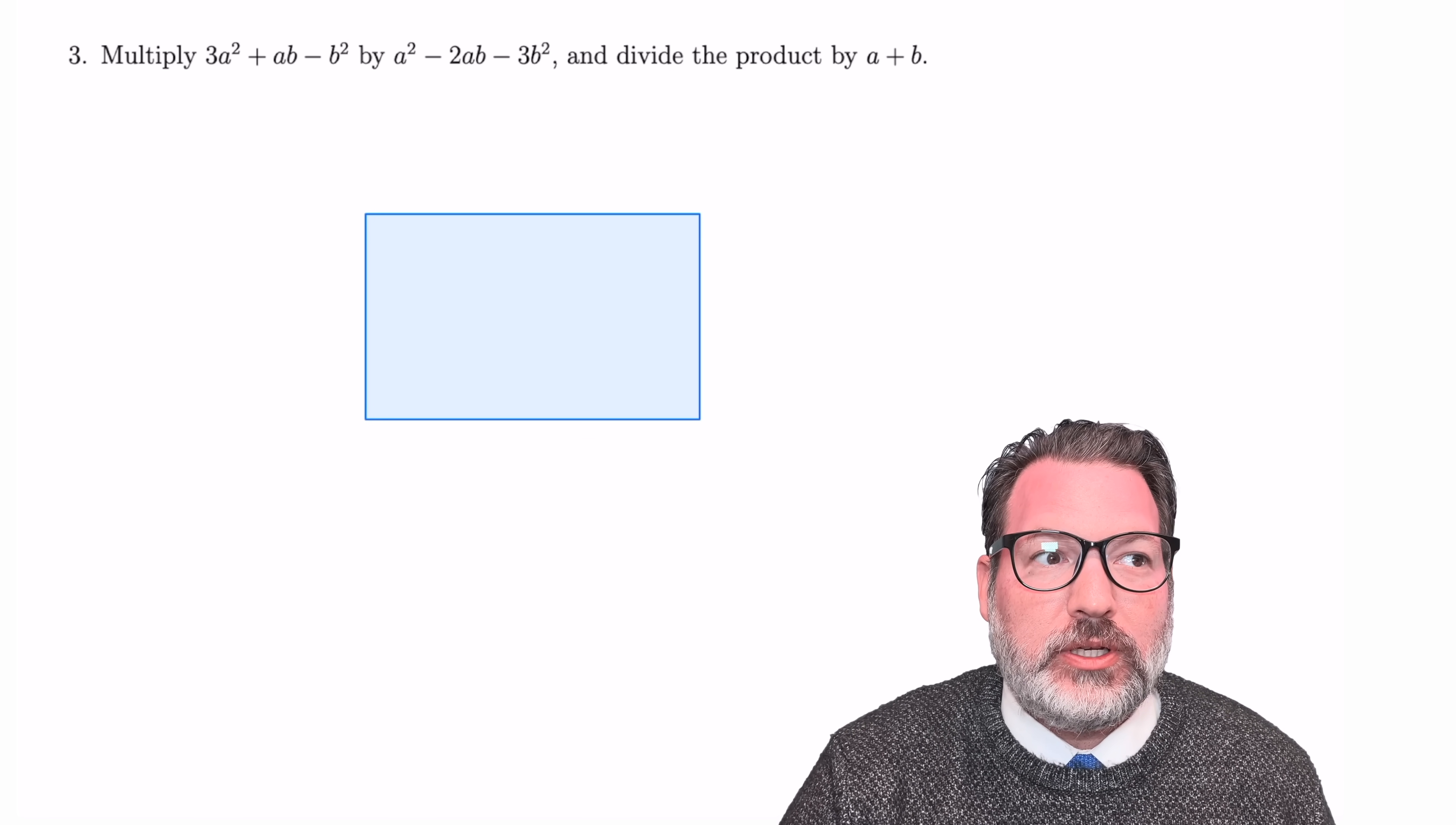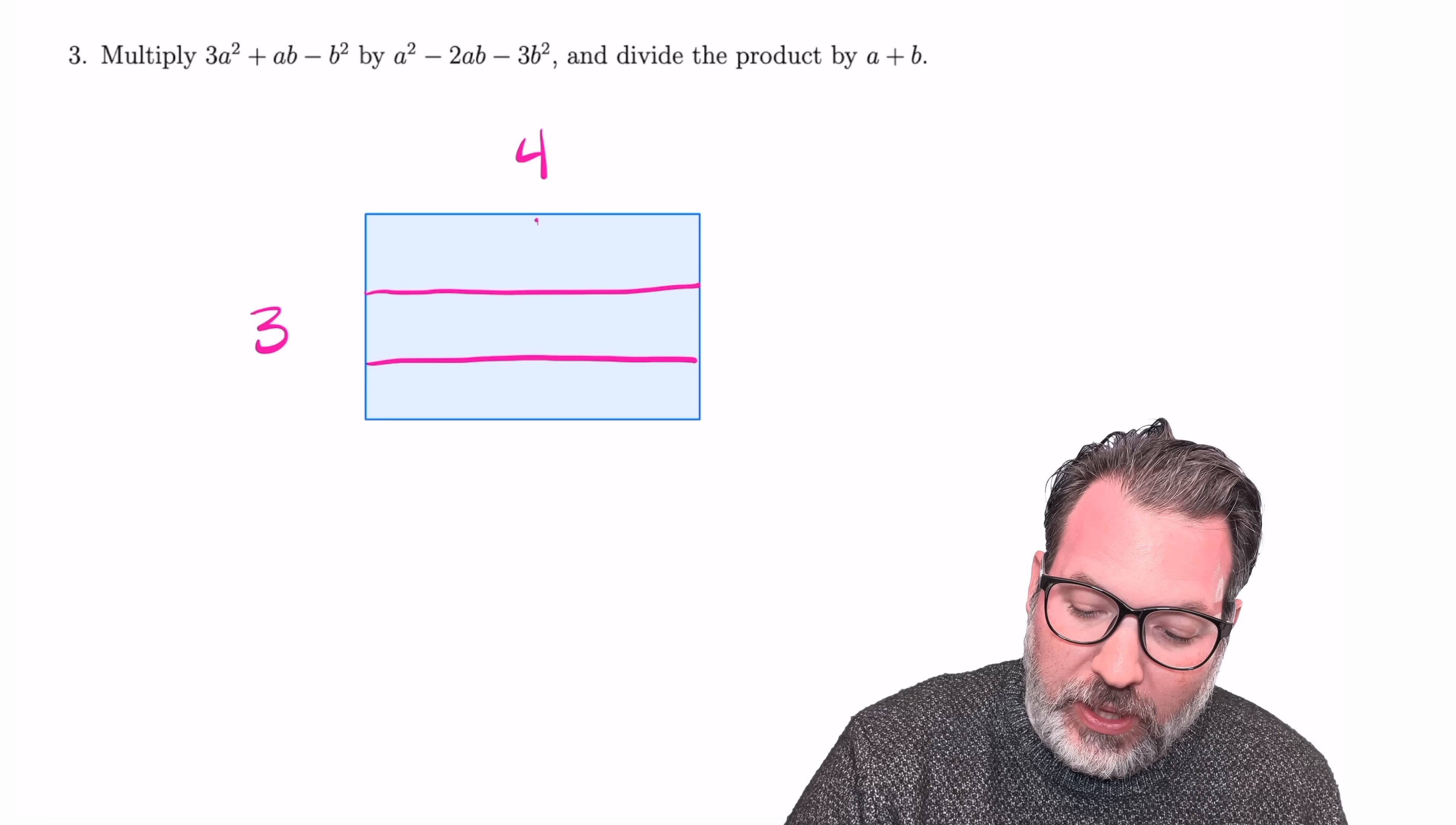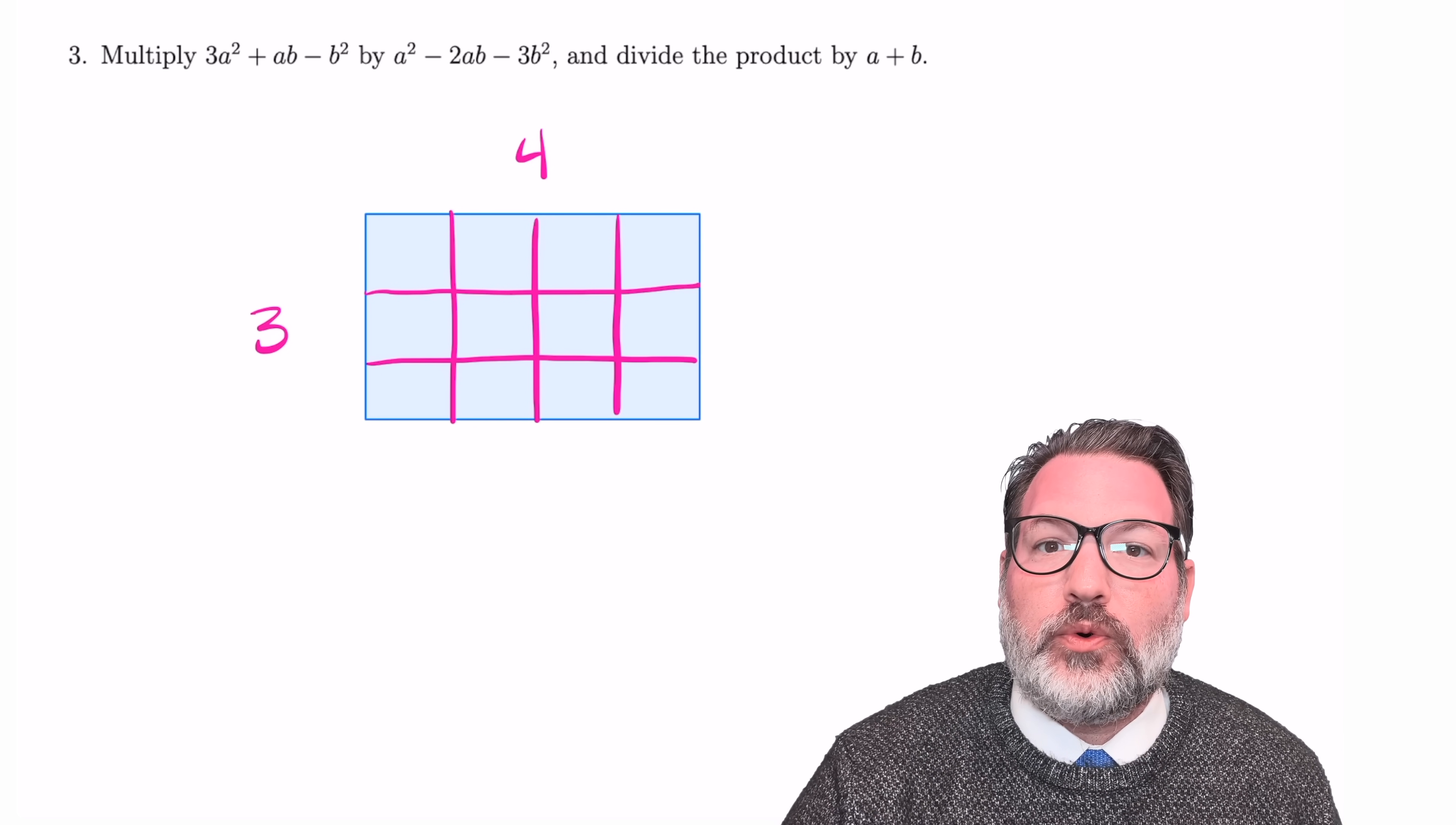It's a way to think about multiplication using area. So a very common thing to do if we wanted to multiply 3 by 4, and we were learning this in second grade or something, would be to think of a literal 3 by 4 rectangle, split it up into its 3 by 4 units everywhere, and then just count up the resulting units. In this case, we can tell pretty easily there end up being 12 units,